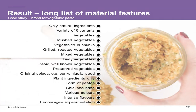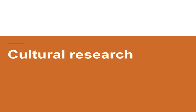This is a short example of the list for this actual vegetable paste I was working on. It's very detailed — for example, you have vegetables, but also mashed vegetables, vegetables in chunks, mixed vegetables, and so on. The important thing for the final result is the variety of six variants and original spices like curry, nigella seeds, and so on. Keep that in mind because it has some implications at the end.